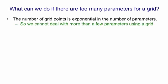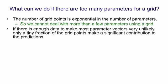The number of grid points is exponential in the number of parameters, so we can't make a grid for more than a few parameters. If there's enough data so that most of the parameter vectors are very unlikely,